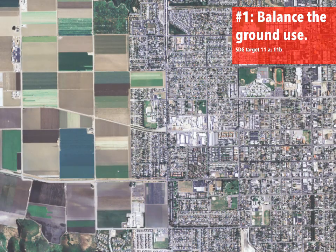In the next slides, we're going to present DOPs and their relevance individually to SDG targets. DOP No. 1, Balance the Ground Use, is correlated with the UN's SDG targets 11A and 11B, which aims to prevent the land degradation caused primarily by land use change and urban sprawl, which is a prominent characteristic of most contemporary urban developments.